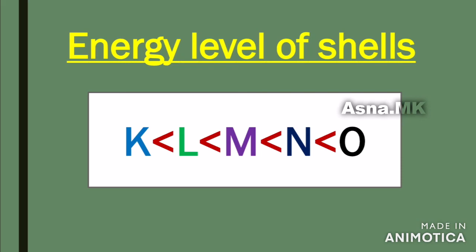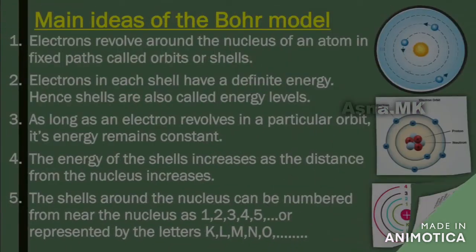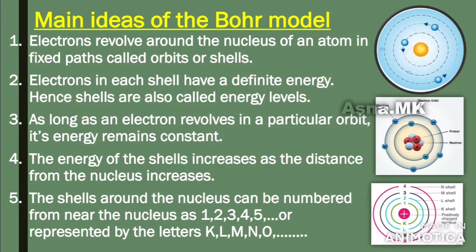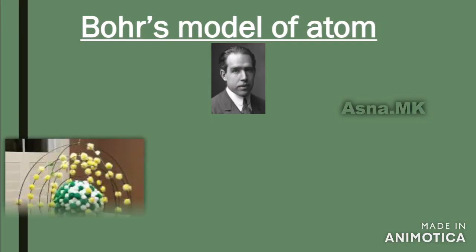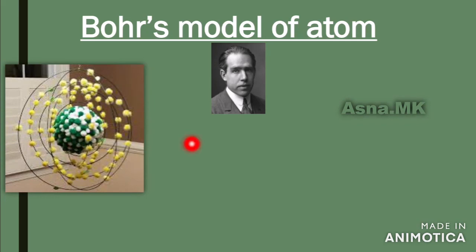These are the five postulates of Bohr's model. Let's look at the structure of the model. In the center of the figure, we have the nucleus with protons and neutrons. Around the nucleus, circular paths called orbits or shells contain the electrons.